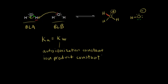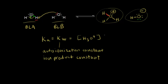When writing an equilibrium expression, you put your products over your reactants in terms of concentration. Looking at our products, we have H₃O⁺, so we write the concentration of hydronium ions times the concentration of hydroxide anions. We don't include the reactants because we have pure water, so we're done writing the equilibrium expression.